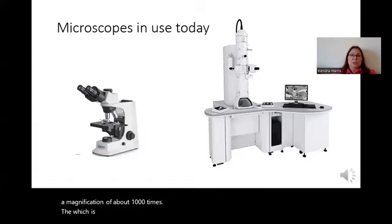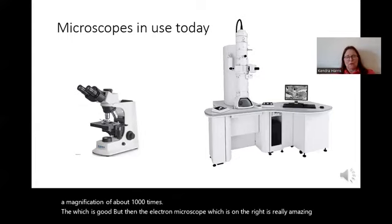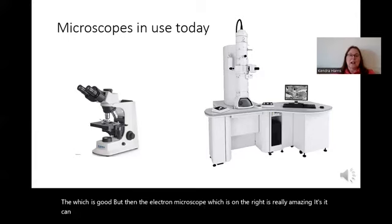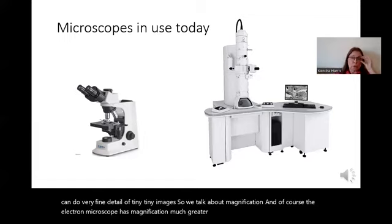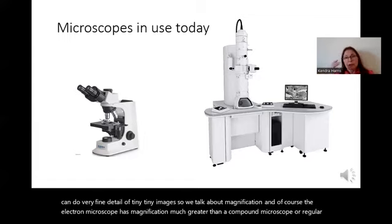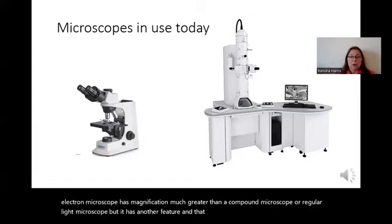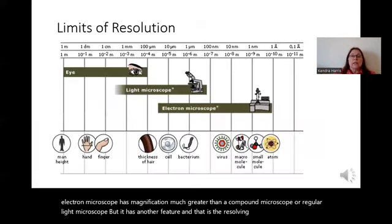The electron microscope, which is on the right, is really amazing. It can do very fine detail of tiny, tiny images. When we talk about magnification, the electron microscope has magnification much greater than a compound or regular light microscope. But it also has another feature, and that is resolving power. Resolving power is the ability to see separate points.